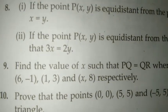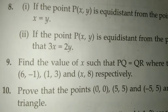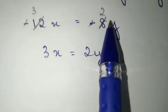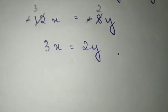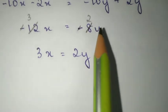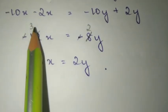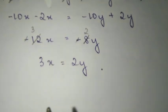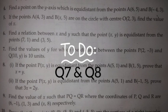Now, similarly in the next question, we need to prove 3x is equal to 2y. What you're going to do here is: -12x is equal to -8y. Bring the terms together, and since the negative signs cancel — numerator and denominator cancel — noting that 4 times 3 is 12 and 4 times 2 is 8, so you get 3x is equal to 2y. Please complete question number 7 and 8.